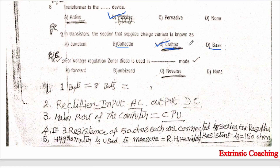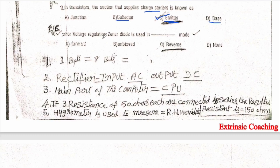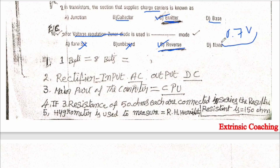The emitter-base junction is generally forward biased and the emitter-collector junction is generally reverse biased — in this active mode the transistor works as an amplifier. Next: for voltage regulation, the zener diode is used in reverse bias mode. If the zener diode were in forward mode, the voltage across it would be 0.7V. This question appeared in the last question paper as well.